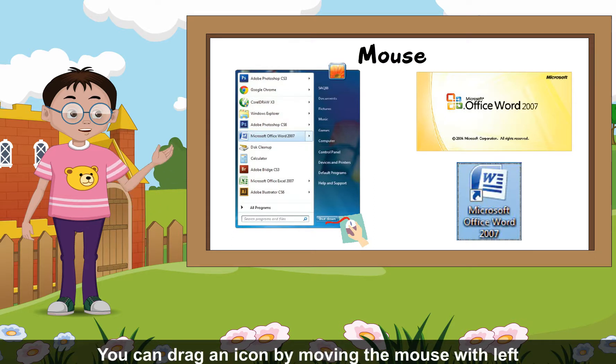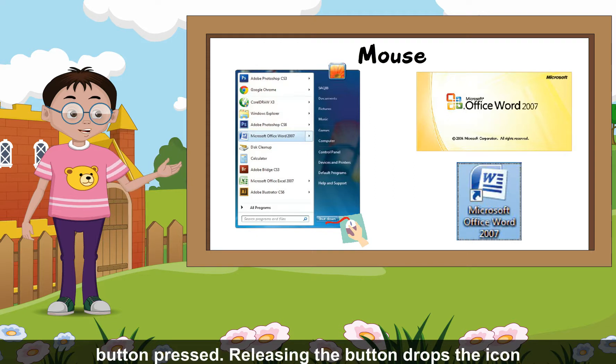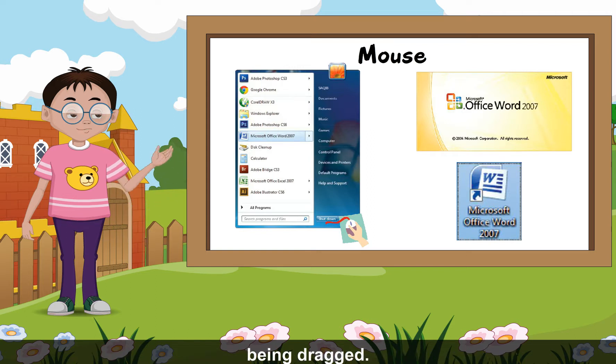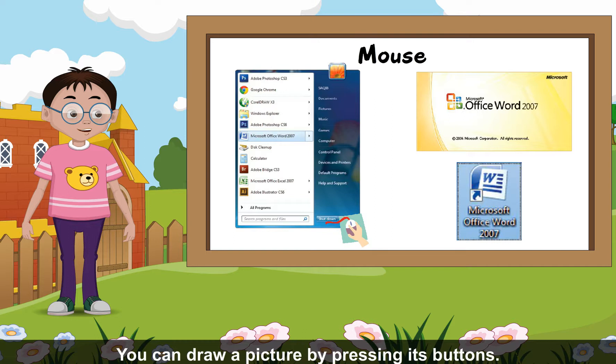You can drag an icon by moving the mouse with left button pressed. Releasing the button drops the icon being dragged. You can draw a picture by pressing its buttons.